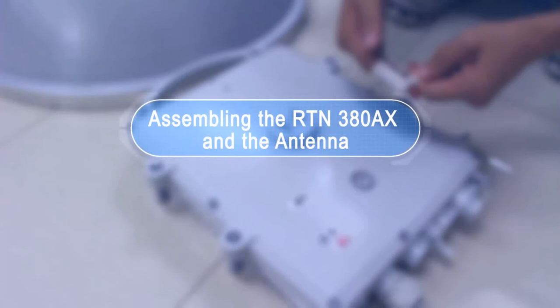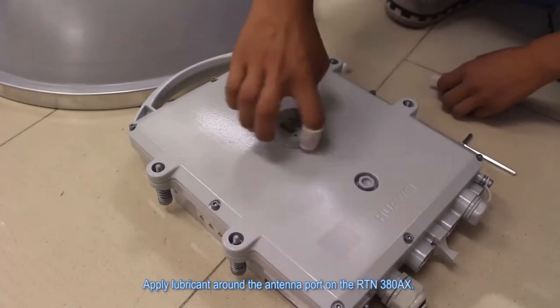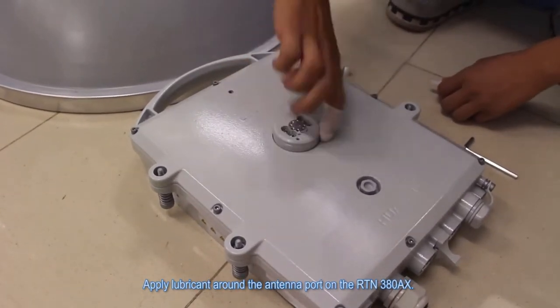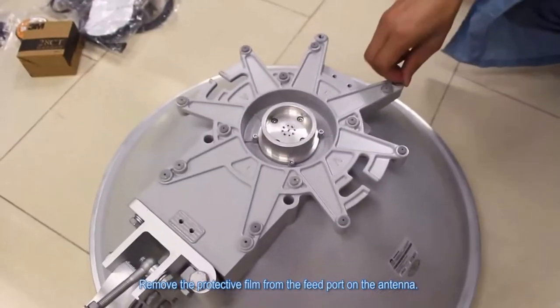Assembling the RTN380AX and the antenna. Apply lubricant around the antenna port on the RTN380AX. Remove the protective film from the feed port on the antenna.